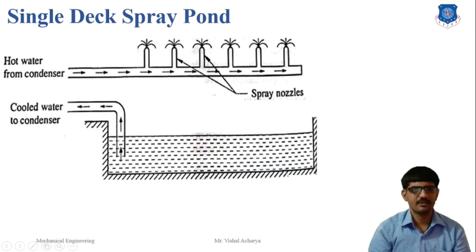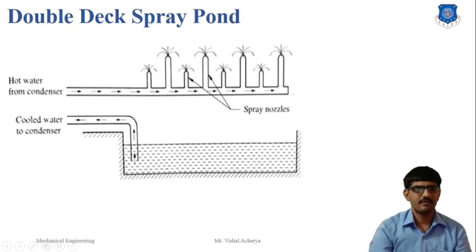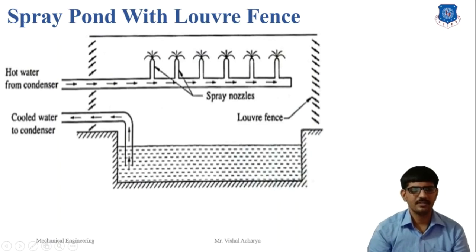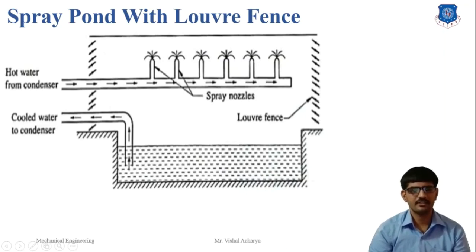In the single deck spray pond, hot water coming from the condenser is sprayed over a large area of the pond, and the hot water is converted into cold water by the action of the evaporation process. In the double deck spray pond, the arrangement of nozzles is not at a single level but at different levels. In the spray pond with fins, fins are required for heat loss treatment. When the velocity of wind is very high, some water is lost, so we arrange fins to improve heat transfer effectiveness and minimize the loss of water.